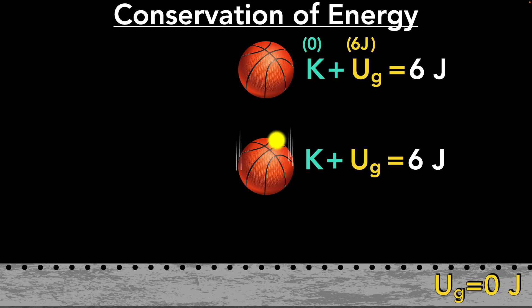But wait a second. We know as the ball gets closer to the earth, its gravitational potential energy decreases. Maybe at this point, the gravitational potential energy is just three joules. Where did the other three go? It didn't disappear!